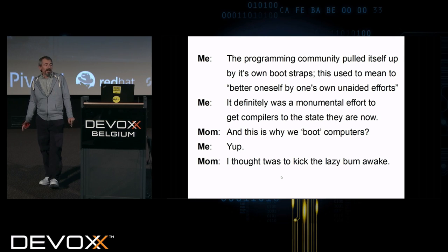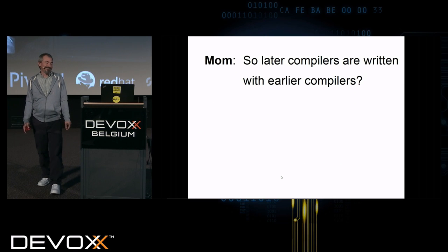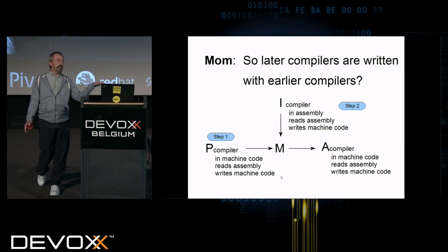And this is why we boot compilers? Yep. I thought it was to kick the lazy bum awake. No. So later compilers were written with earlier compilers? Yes. There was some step one, written a long time ago, where some poor person wrote a compiler in machine code, which reads assembly and writes machine code. It has to be written in machine code to run on the machine.